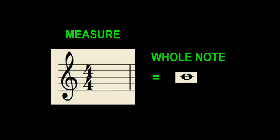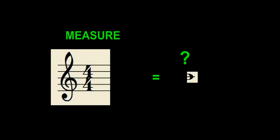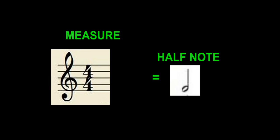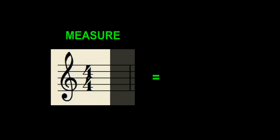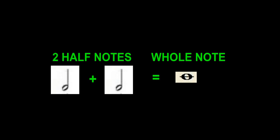What we're going to discover is that we can get new notes by halving. So we're going to ask ourselves: what is one half of a whole note? If you guessed a half note, you would be correct. A half note is equal to one half of a measure, one half of a whole note. And because one half plus one half equals a whole, a whole note is also equal to two half notes.